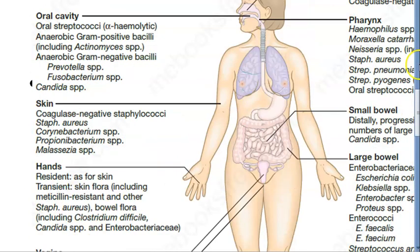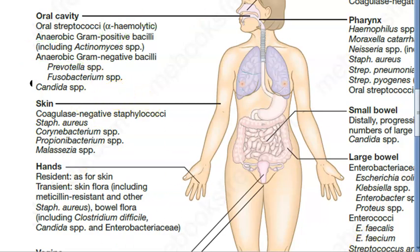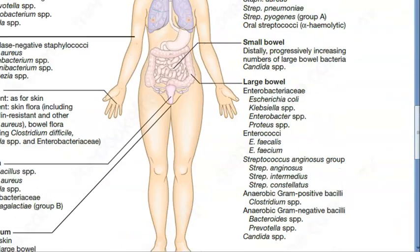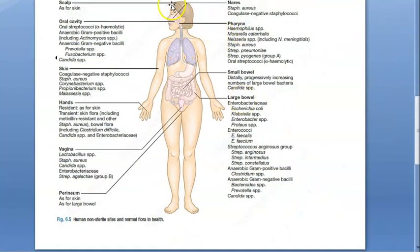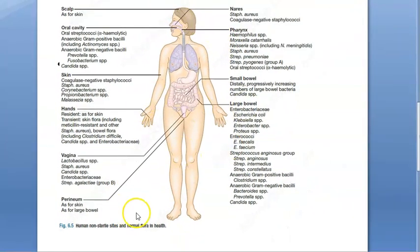Propionibacterium is there as well. In the oral cavity, you have alpha-Streptococcus — always alpha. Anaerobic organisms are present even in the oral cavity, which is strange since there is so much air. Candida is found almost everywhere. The scalp is similar to regular skin flora. All of these are your normal flora.